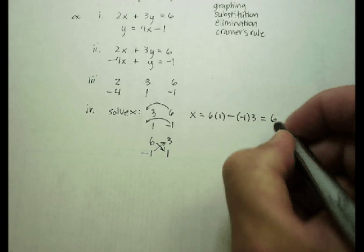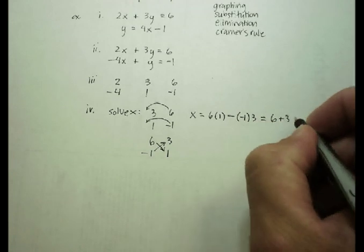And then you go minus negative 1 times 3. That's going to give me 6 plus 3, or 9.